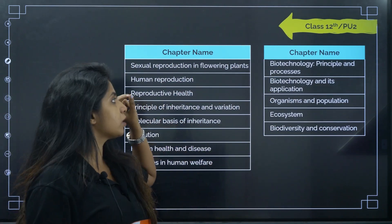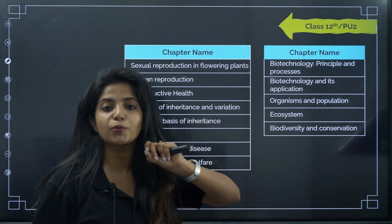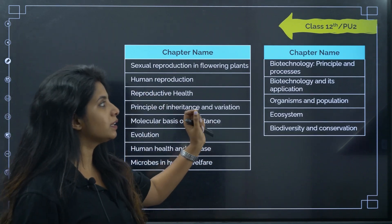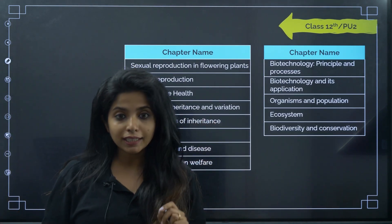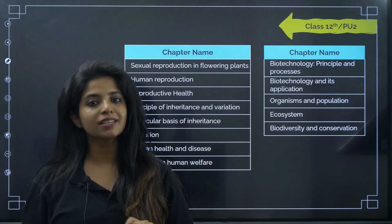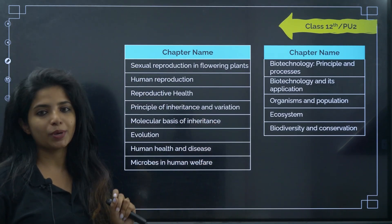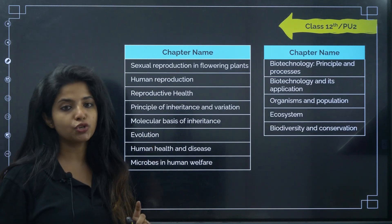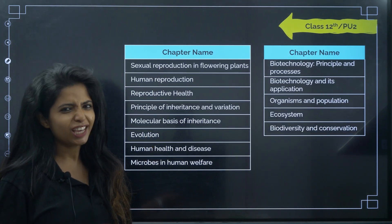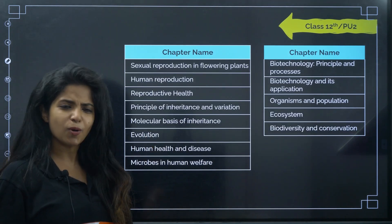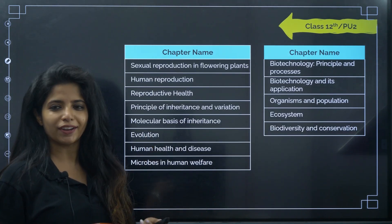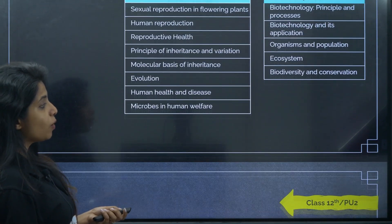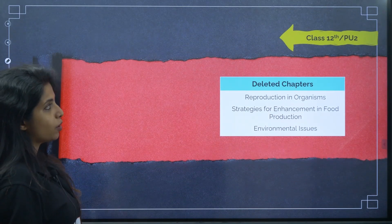All of these things you'll be studying in 12th grade. If you count the number of chapters it comes out to be 13, so in 12th grade you have 13 chapters altogether. If you want to take a screenshot you can.